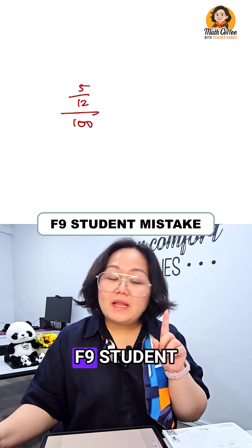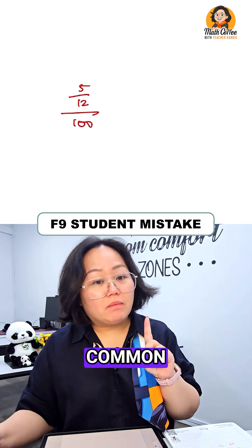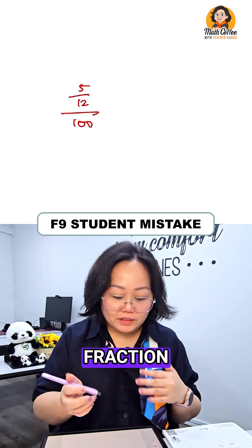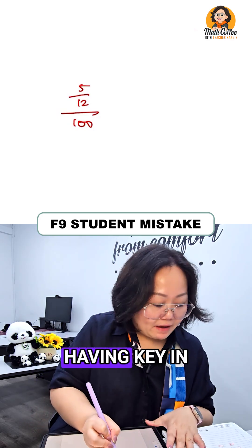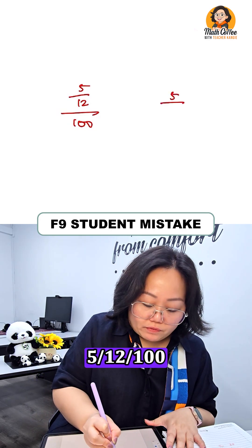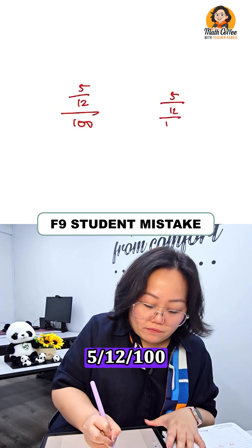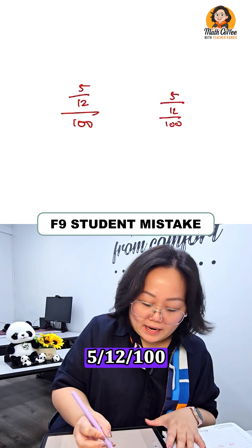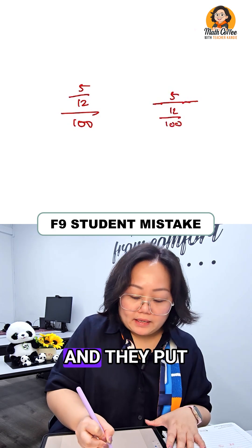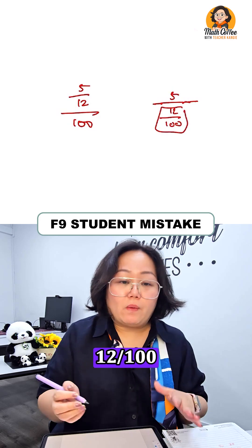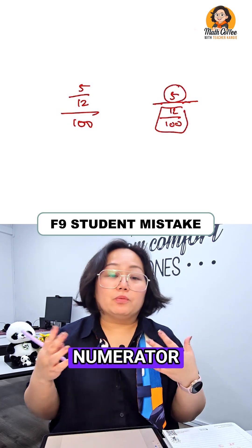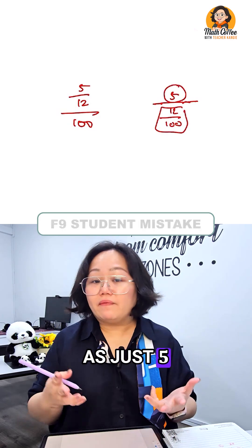This is an F9 student common mistake. When you key in a fraction within a fraction, what usually happens is they end up keying in 5 over 12 over 100 — putting 12 over 100 as the denominator and just 5 as the numerator.